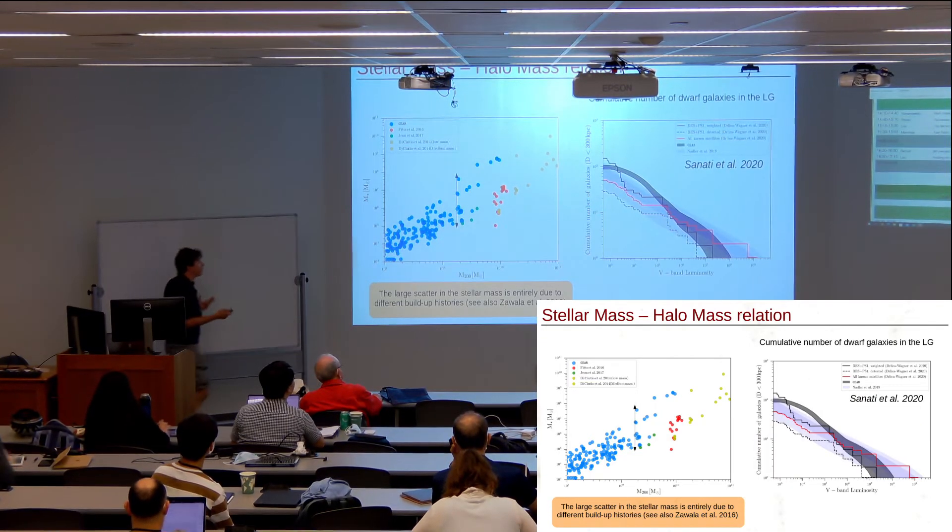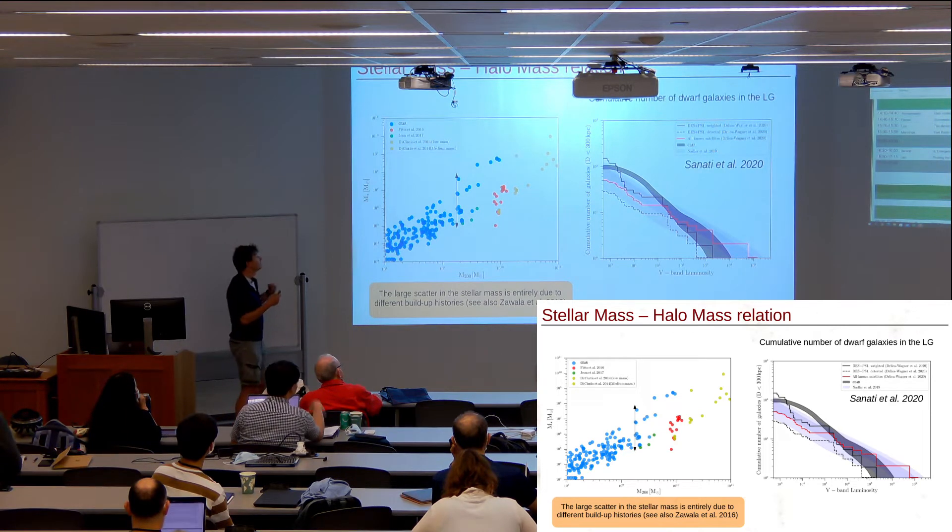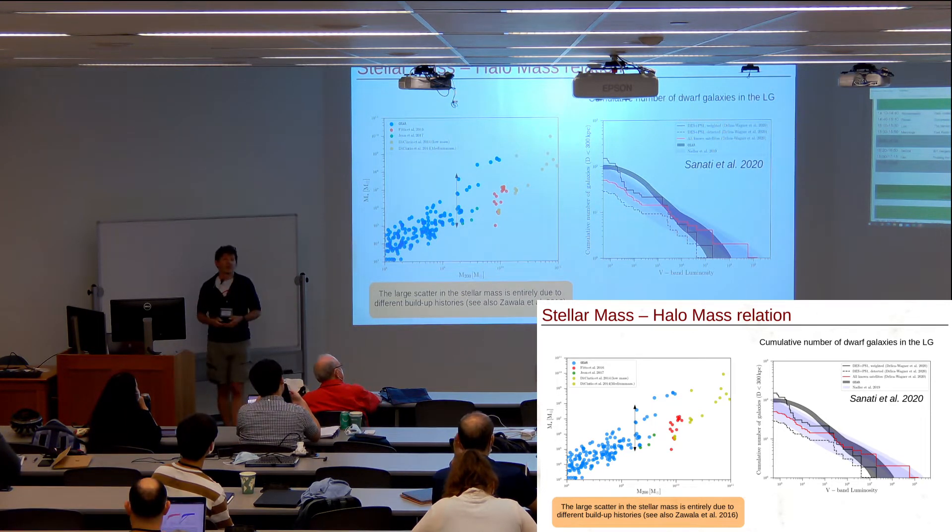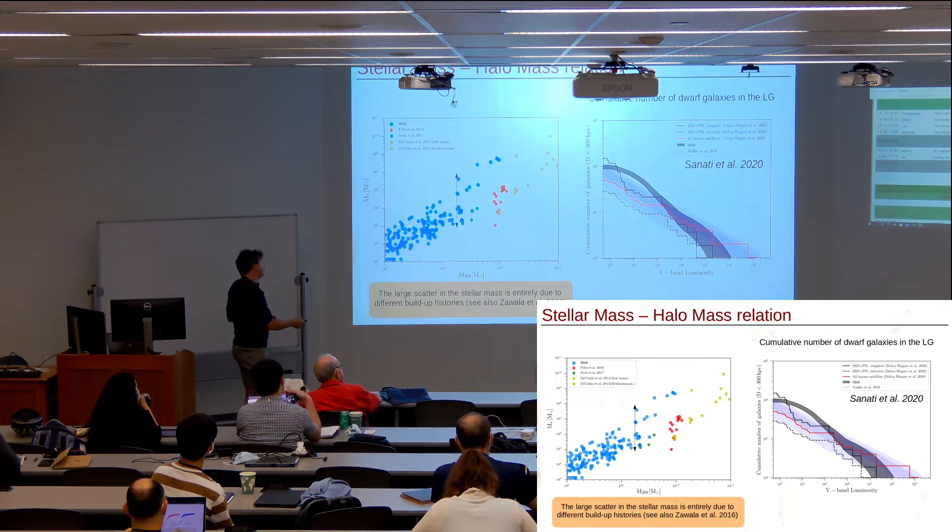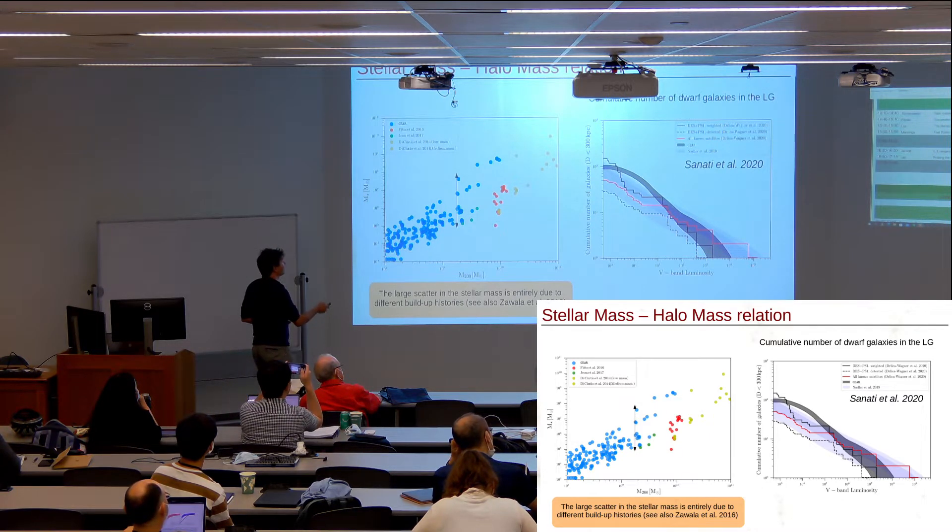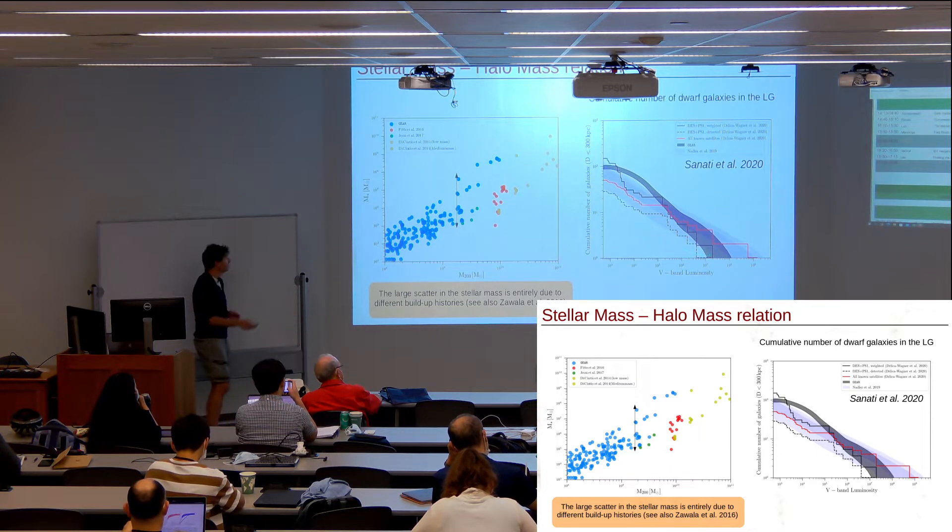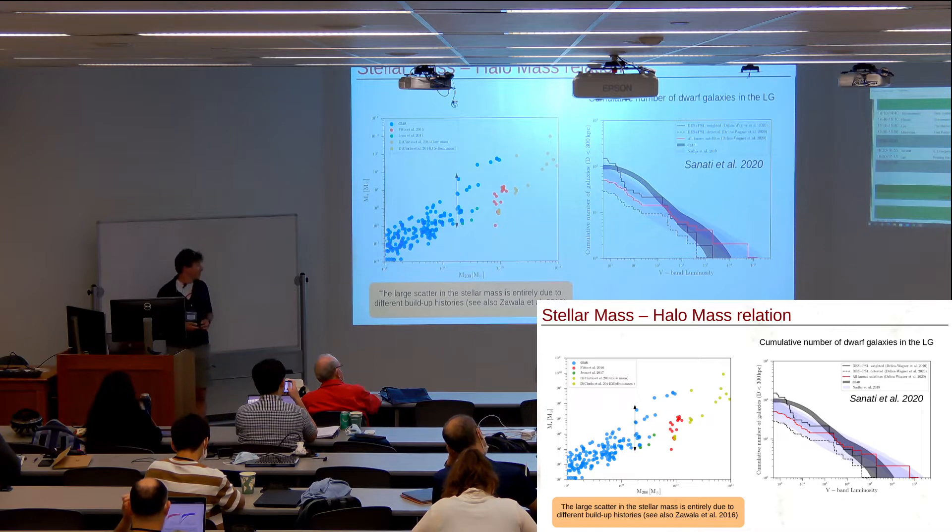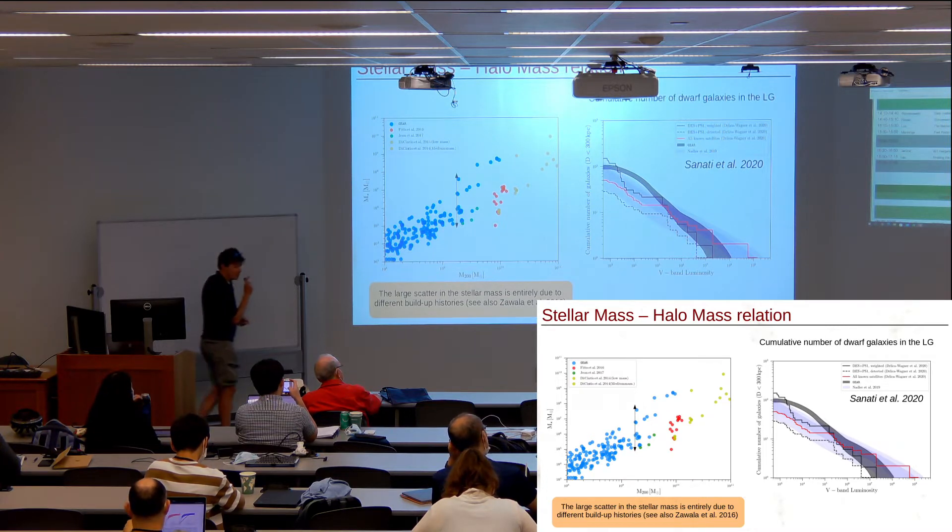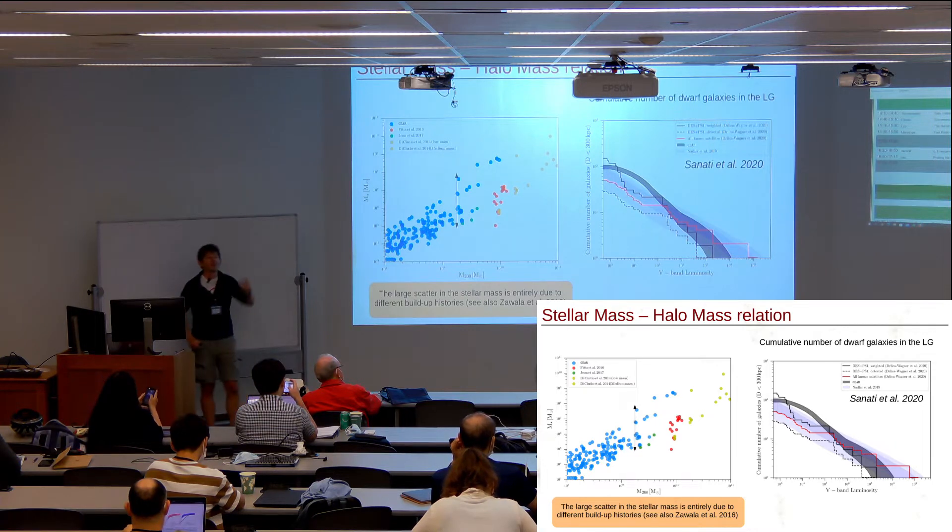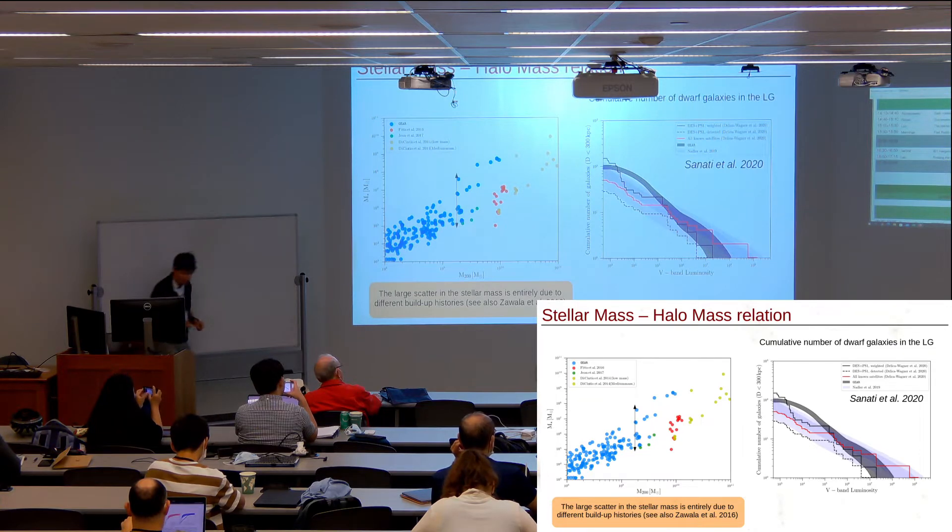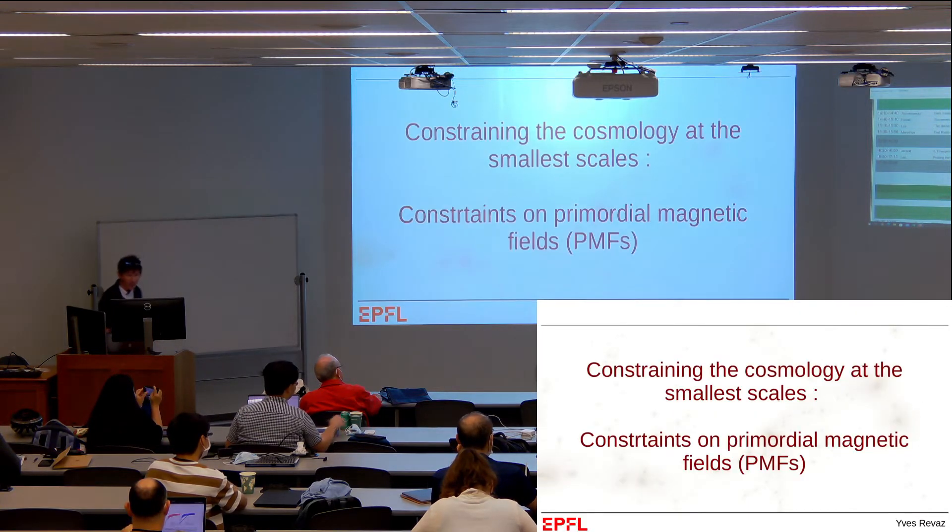Having this relation, we can look at whether we would produce the right number of satellites around the Milky Way. This shows the cumulative number of galaxies around the Milky Way as a function of luminosity. The black area is our prediction, compared to the SDSS survey in red and black. Keep in mind that we're doing zoom-in simulations, so we don't take into account interaction with the Milky Way, so this plot has to be taken with a pinch of salt.